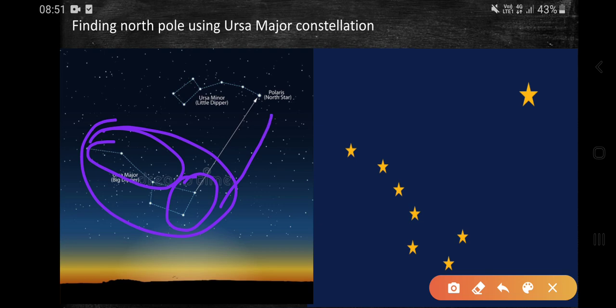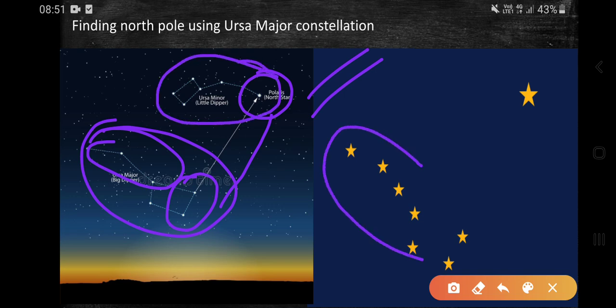Now create a line with reference to the Pointer Stars and you will significantly hit a brighter star which is known as Polaris or the North Star, which belongs to the constellation of Ursa Minor. This is the Ursa Major constellation, these two are the Pointer Stars, and this is the North Star.